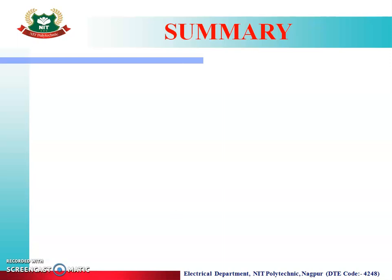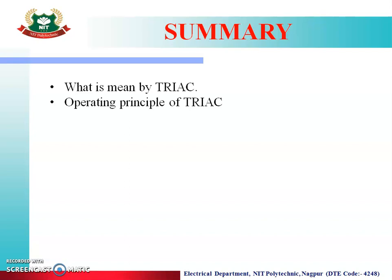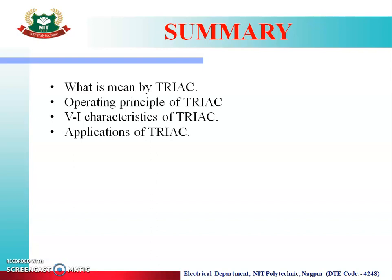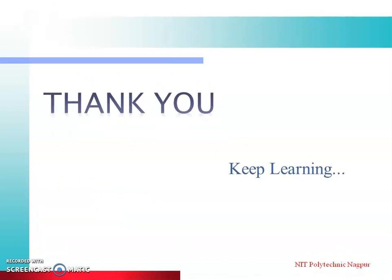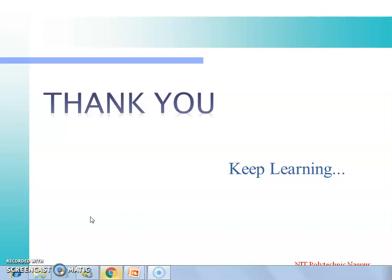The summary of today's session: we studied what is meant by TRIAC, the operating principle of TRIAC, and the VI characteristics of TRIAC. We showed that TRIAC is a bidirectional device, and studied the applications of TRIAC such as the light dimmer circuit, fan regulator, etc. In the next class, we will study SCS — that is, silicon controlled switch. Thank you very much.